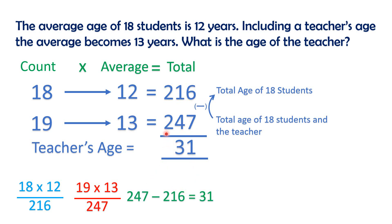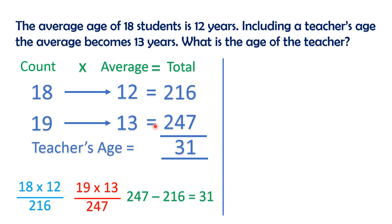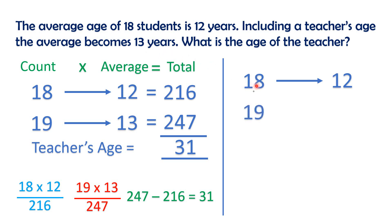Count into average is equal to total. Using this formula, we can solve and save time with the shortcut method. The average age of 18 students is 12 years — this is the first information.